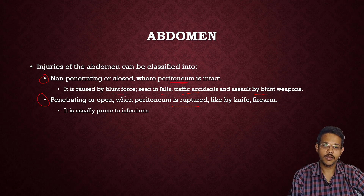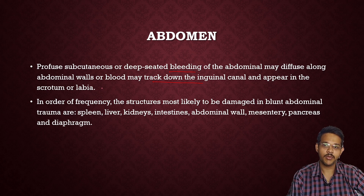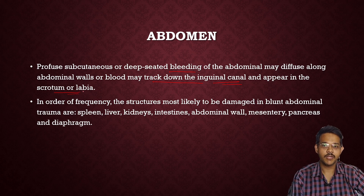Profuse subcutaneous or deep-seated bleeding of the abdomen may sometimes diffuse along the abdominal walls, or blood may track along the inguinal canal and appear in the scrotal or labial area. In blunt abdominal trauma, blood may get diffused evenly throughout the abdominal wall or trickle along the inguinal canal and appear in the scrotal or labial area as shifting contusions. In order of frequency, organs most likely to be damaged in blunt abdominal trauma are: spleen, liver, kidneys, intestine, abdominal wall, mesentery, pancreas, and diaphragm.